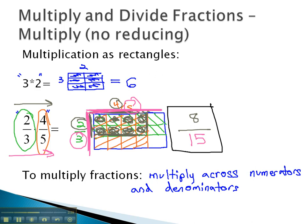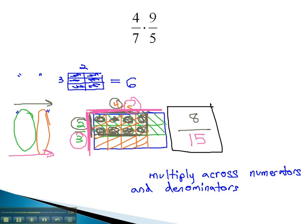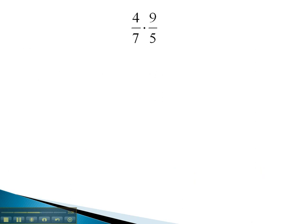Let's try some examples where we multiply across without having to draw the rectangle itself. In this problem, we're multiplying 4 sevenths times 9 fifths. We just discovered that to multiply them, we simply have to multiply across the numerators to find the double shade. 4 times 9 is 36.